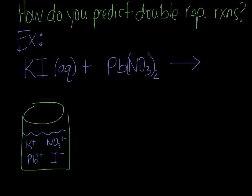Now we're going to predict the products of a double replacement reaction. I recognize this as a double replacement reaction because it contains two aqueous ionic compounds mixed together. We're going to assume that this is going to react and produce a precipitate. I drew a visual so you can see what's actually happening on an atomic level. When a compound is aqueous, it breaks up into its ions, so potassium iodide breaks up into potassium and iodine ions, and lead nitrate also breaks up.